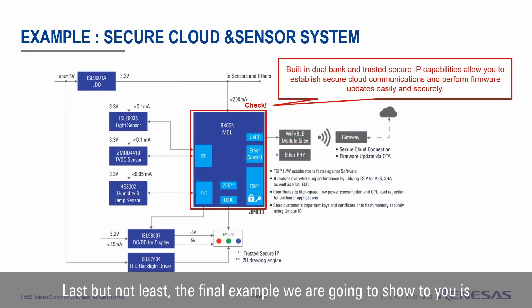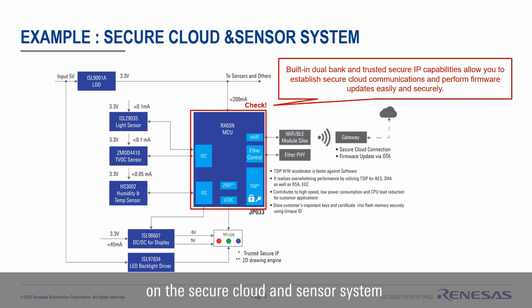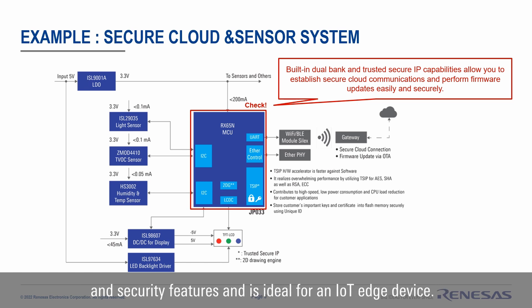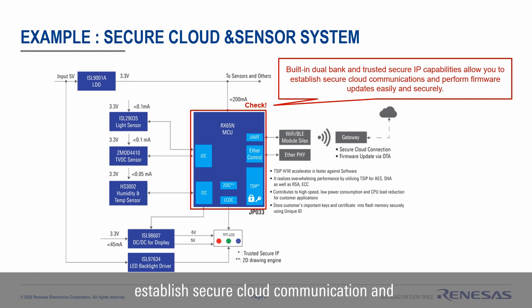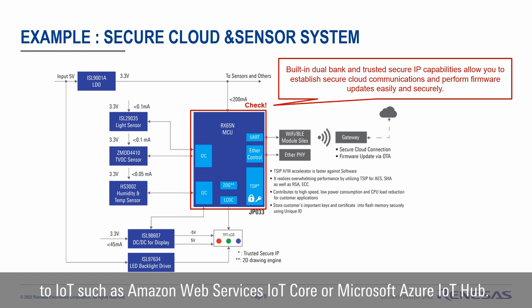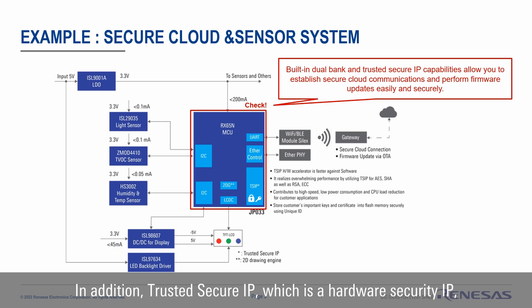Last but not least, the final example is the secure cloud and sensor system. The RX65N is an MCU that can perform human-machine interface and security features, and is ideal for an IoT edge device. The built-in dual bank function and trusted secure IP functions establish secure cloud communication and perform firmware updates easily and safely. Cloud solutions make it easy to connect secure IoT endpoints to services such as Amazon Web Services IoT Core or Microsoft Azure IoT Hub. The trusted secure IP, which is a hardware security IP, can realize faster cryptography processing than using software IP.